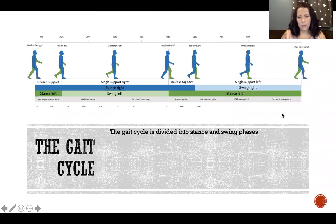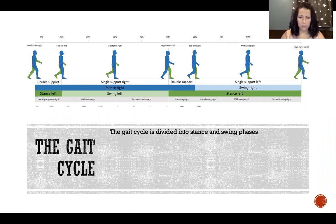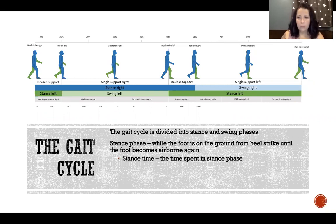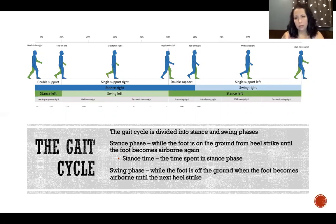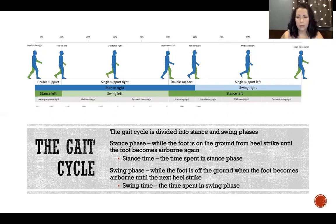The gait cycle is divided into stance and swing phases. Stance phase is when the foot is on the ground, going from heel strike until the foot is lifted and becomes airborne again. Stance time is the length of time the foot is in stance phase. Swing phase is when the foot is off the ground — from when the foot becomes airborne until the next heel strike — and swing time is the time spent in that swing phase.